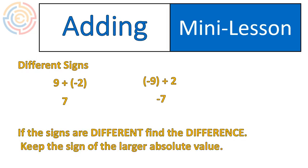If the signs are different, you find the difference between them. In other words, subtract the numbers. So with the first example, 9 minus 2 gives us 7. In our second example, 9 minus 2 gives us 7. We subtract the numbers...